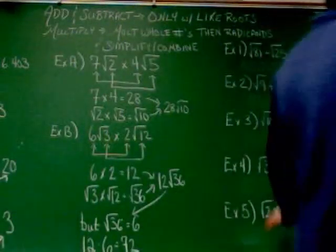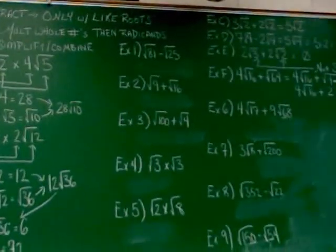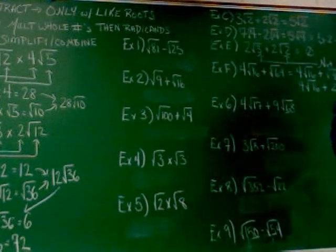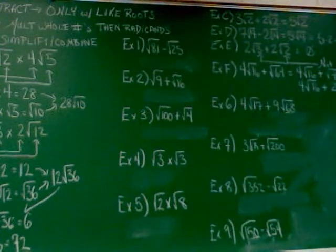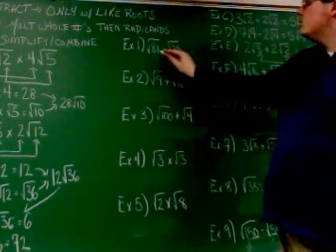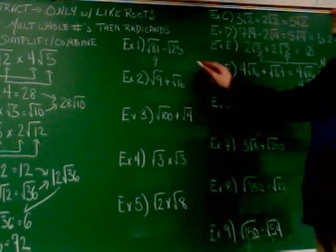Let's go to the next column — it's just basic problems with perfect roots, nothing too tricky. Example one: the square root of 81 minus the square root of 25. Remember, when we're subtracting we can't jam things together — they have to be taken in parts. Square root of 81 equals 9, because 9 times 9 is 81. Square root of 25 equals 5.